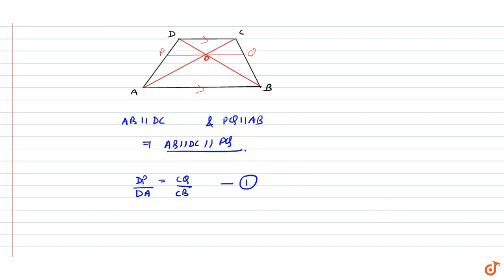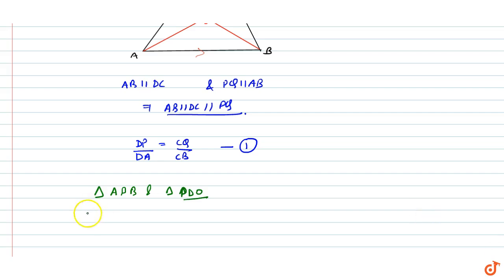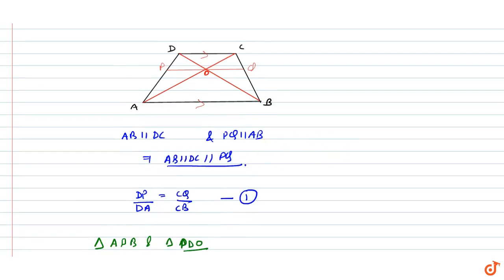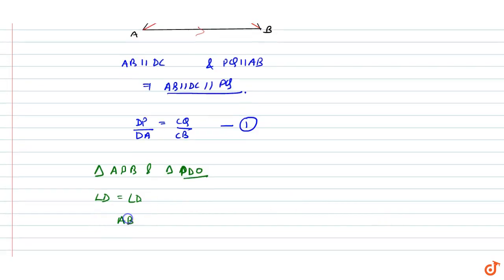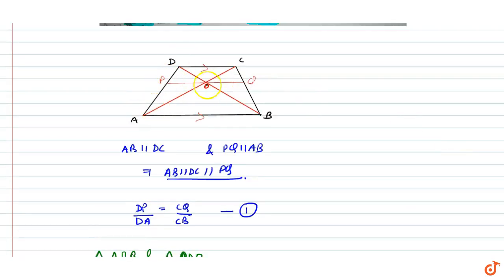Now we have triangle ADB and triangle PDO. Angle D is the same in both, and AB is parallel to PO, so the corresponding angles are the same.